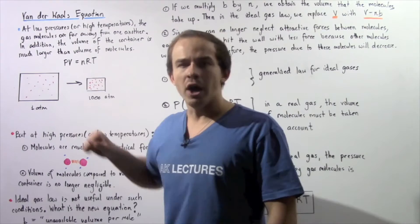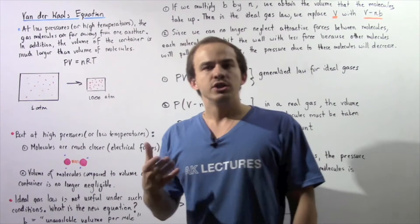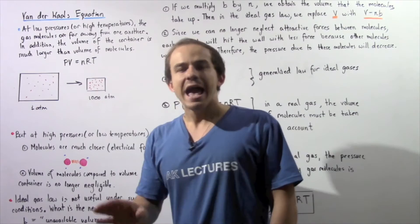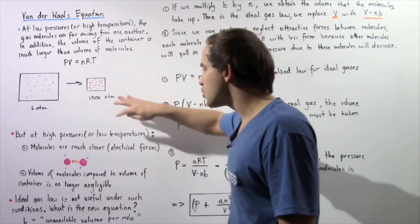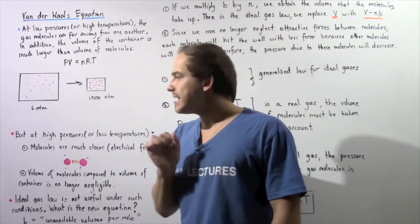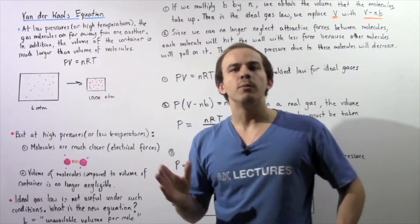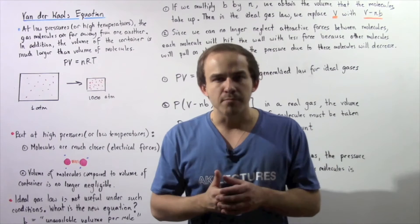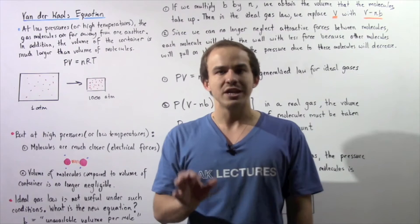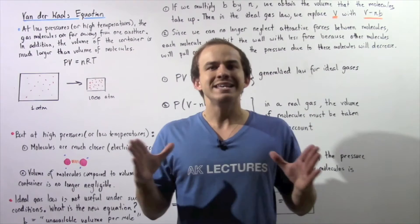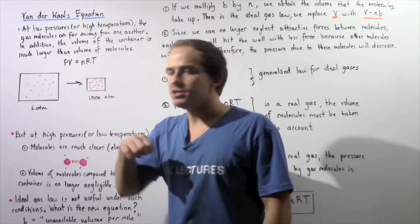But if we increase the pressure to, say, 1000 atm from one atm, we can no longer use the ideal gas law to describe the way that our real gas molecules behave. At high pressures or at low temperatures, two deviations take place. Deviation number one: the molecules are now much closer to one another, so the distance between any two neighboring molecules decreases, meaning the electrical forces increase and are no longer negligible. This will in turn decrease the pressure.